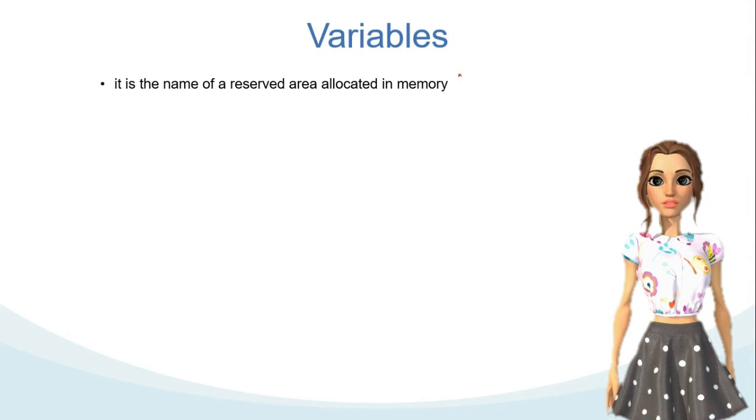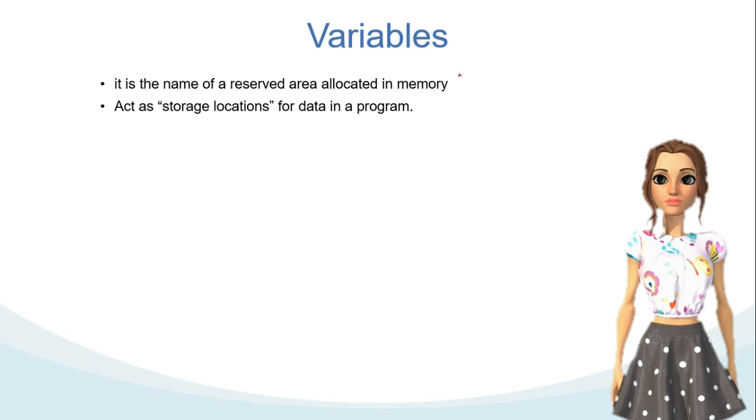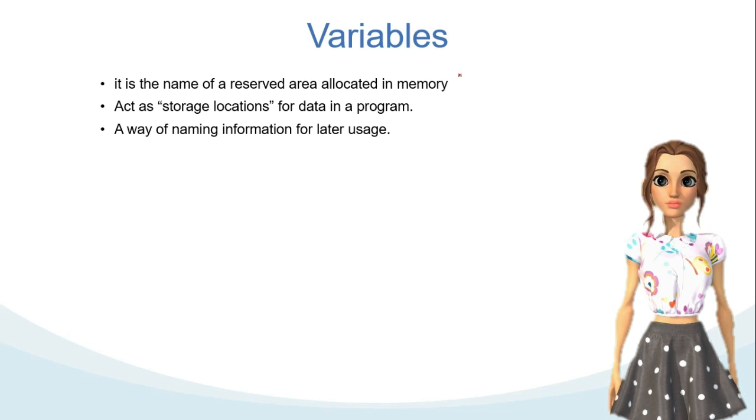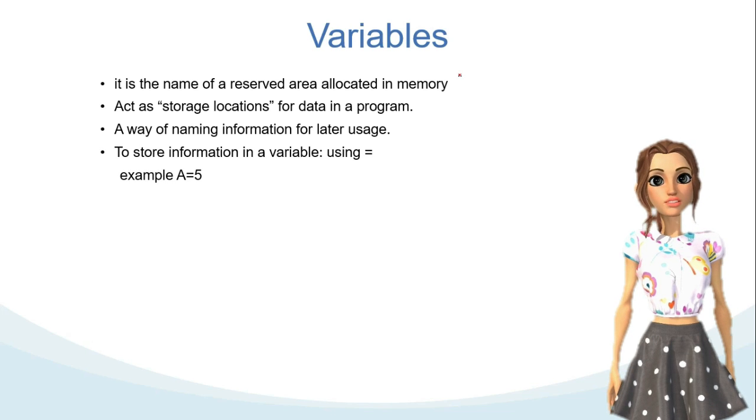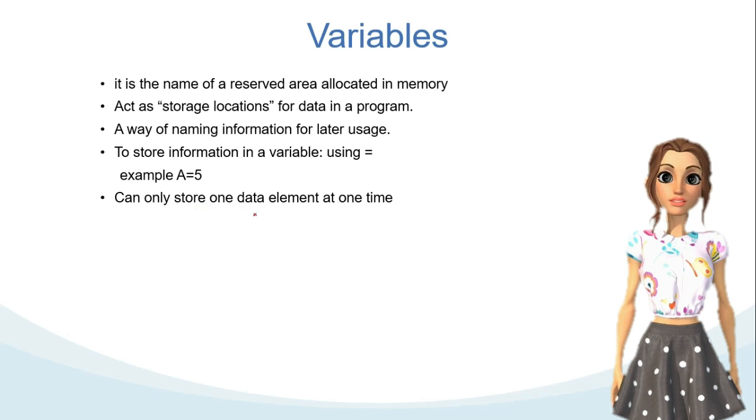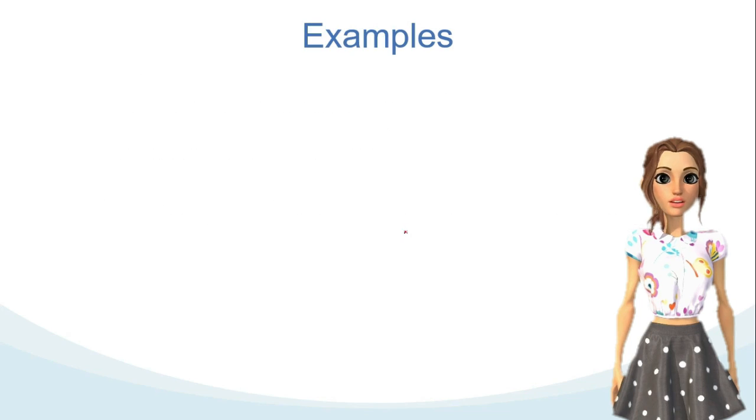Variables in programming is the name of a reserved area allocated in memory. Variables act as storage location for data in a program. It's a way of naming information for later usage. To store information in a variable you use the equal sign. For example, if you want to store 5 in variable a, then you write a equals 5. A variable can only store one data element at one time. Each variable can store a particular type of data like strings, reals, booleans, and integers. Now let's see the example on how to name the variable.